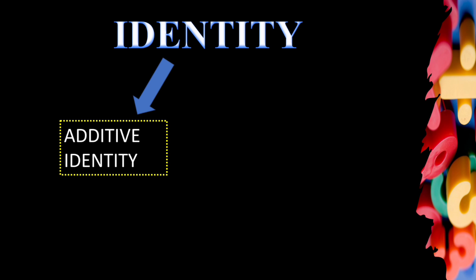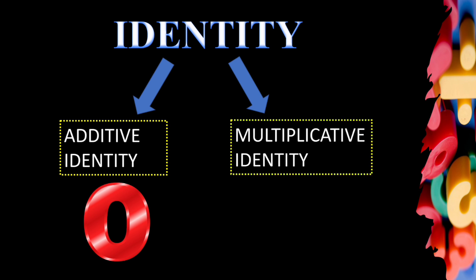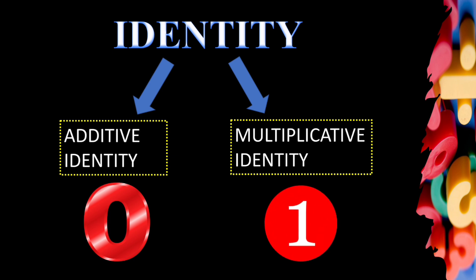Next is identity. First is additive identity: whenever we add a number to any other number and get the same result — that is, the result is unchanged — that is the additive identity. That number is 0. Whenever we add 0 to any number, we get the same result. So 0 is the additive identity for any number. The other is multiplicative identity: when we multiply a number and get the same result, that is the multiplicative identity. That number is 1. Whenever we multiply 1 by any number, we get the same result. So 0 is the additive identity and 1 is the multiplicative identity for any number.